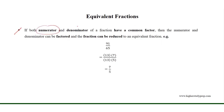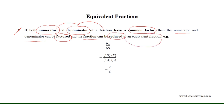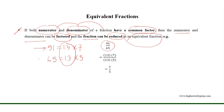If both the numerator and denominator of a fraction have a common factor, then the numerator and denominator can be factored, and the fraction can be reduced to an equivalent fraction. For example, 91 over 65 is a fraction where 91 equals 13 times 7 and 65 equals 13 times 5. Since 13 is a common factor, they can be factored and the fraction equals 13 times 7 over 13 times 5, so 7 over 5 is the equivalent fraction of 91 over 65.